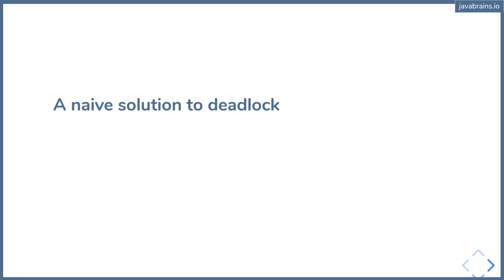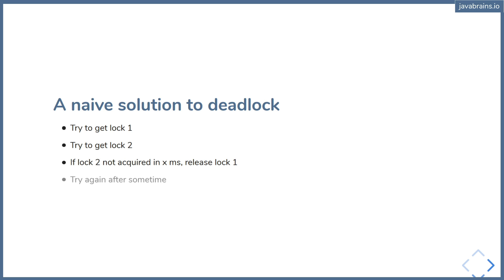You've seen the deadlock problem. To solve it, you say: I'm going to try and get lock one, then try to get lock two. If lock two is not acquired within a certain amount of time, I'm going to release lock one and try again after some time. Seems like a simple solution — you want to avoid the deadlock by not holding onto lock one if you can't get lock two. Otherwise that's what's causing the deadlock. So you try for a little bit, and if you don't acquire the second lock, you release the first lock and retry after a fixed amount of time.